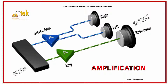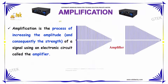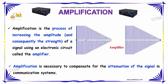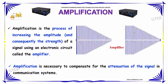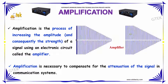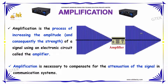Amplification is the process of increasing the amplitude of a signal using an electronic circuit called the amplifier. Amplification is necessary to compensate for the attenuation of the signal in communication systems.